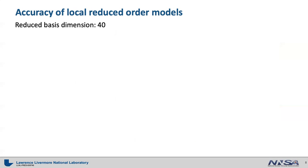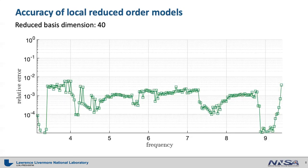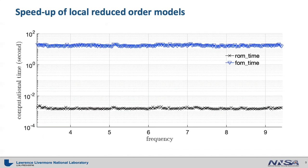We used a reduced basis size of 40 to build a local reduced order model for each training point, then applied interpolation of the reduced operator to parameterize. The accuracy results show that all relative errors are below 1%. In terms of speed-up, the full order model takes on average about 10 to 20 seconds, while the reduced order model takes on average 10 to the negative 3 seconds, implying a speed-up of around 10,000. This was possible due to the small size of each individual local reduced order model.